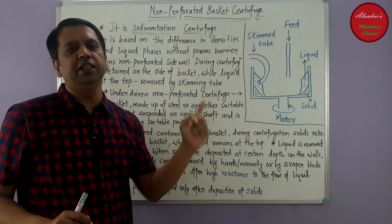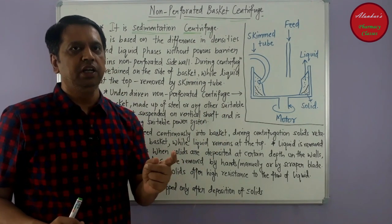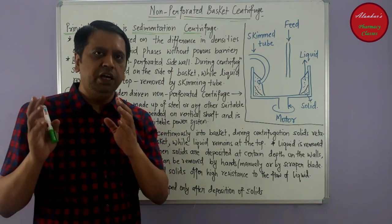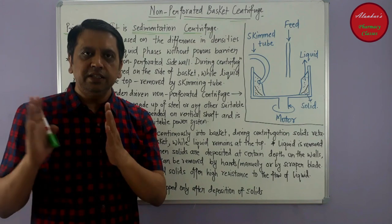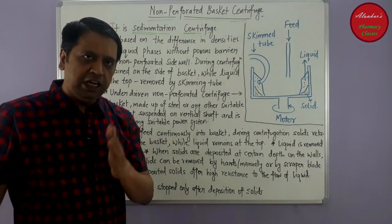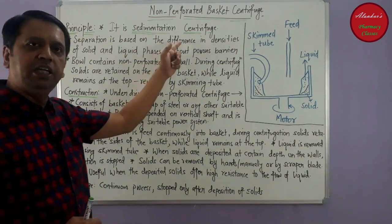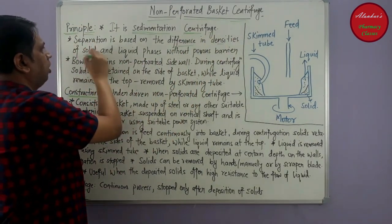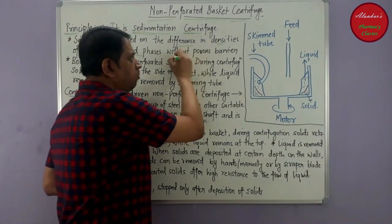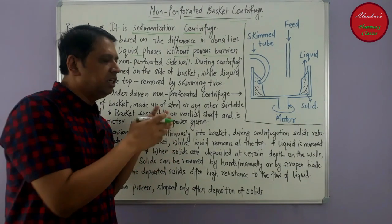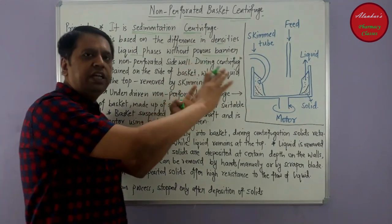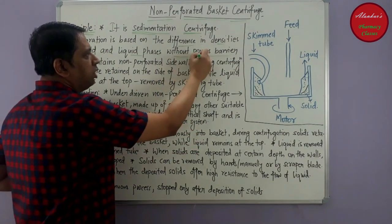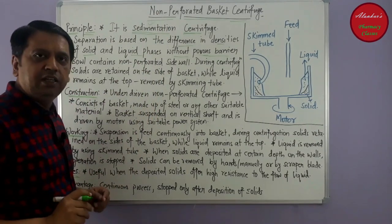There is no perforated media in this kind of centrifuge for the separation of solids from liquid, and that's why it is called a sedimentation centrifuge. On the other hand, the perforated basket centrifuge has perforations in its basket portion where separation between solids and liquid occurs, making it a filtration centrifuge. Here, separation is based on differences in densities between solid and liquid phases without any porous barrier.